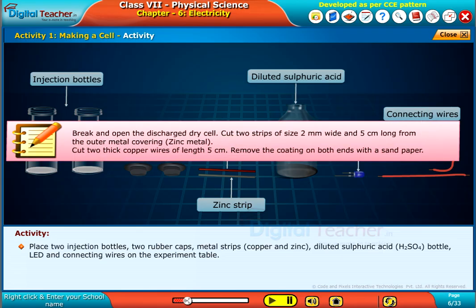Note, break and open the discharged dry cell. Cut two strips of size 2 mm wide and 5 cm long from the outer metal covering, i.e. zinc metal. Cut two thick copper wires of length 5 cm. Remove the coating on both ends with a sandpaper.